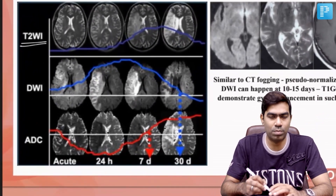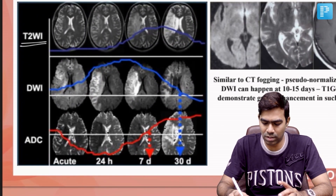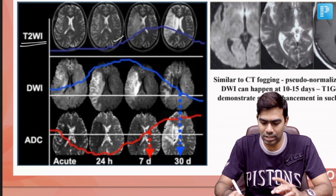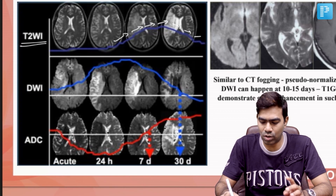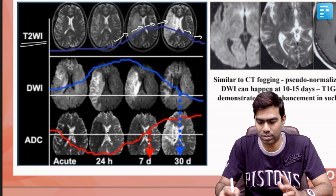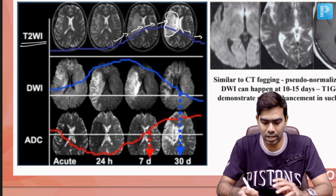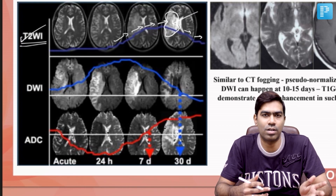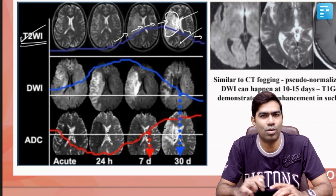Looking at the graph — T2-weighted imaging abnormality starts by around 6 to 24 hours, but is very subtle initially. FLAIR sequence abnormality starts by around 6 hours itself and consistently increases after 6 to 24 hours. In the chronic stage, FLAIR persists as abnormal because cystic encephalomalacia develops — fluid with CSF density — and since CSF is bright on T2, those areas also appear bright. So T2/FLAIR is more useful for identifying old strokes.